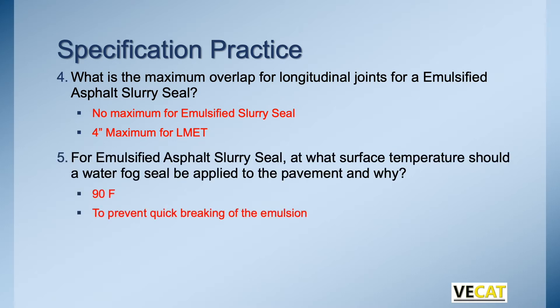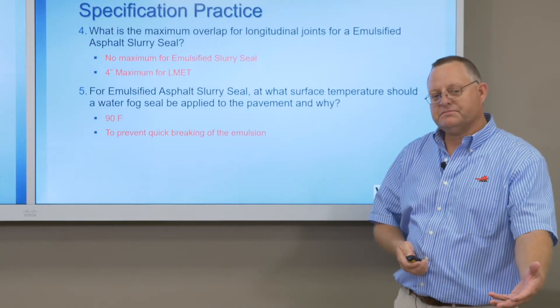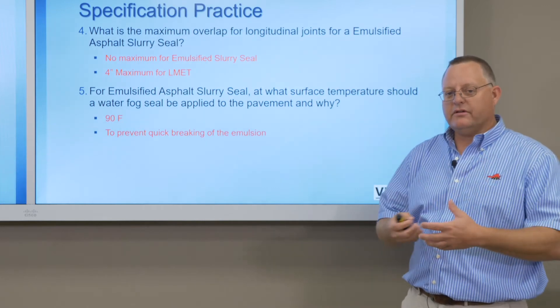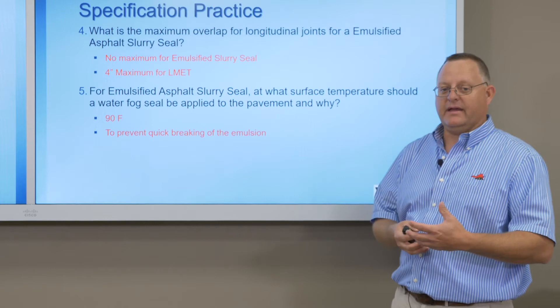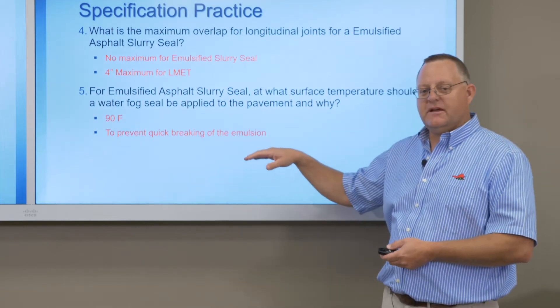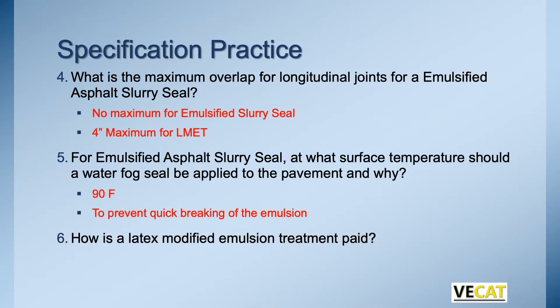When do you apply a fog seal and why? When the pavement temperature is 90 degrees or higher, you'll apply a light fogging of water to prevent quick breaking of the emulsion. When that emulsion is sprayed and the pavement temperature is very hot, the water in the asphalt breaks quickly and it sets up too fast — so you're spraying water to cool the surface down just enough to slow the setting. And how is latex modified emulsion treatment paid for? We pay for it by the ton.